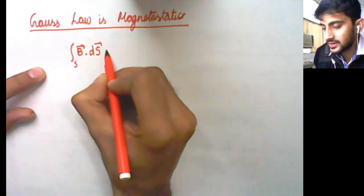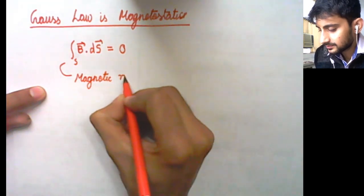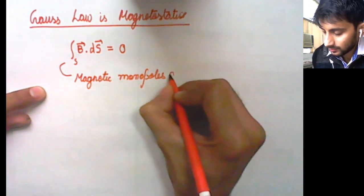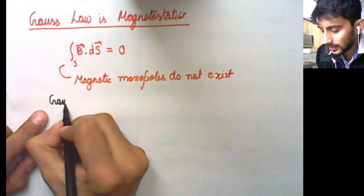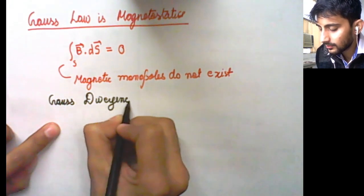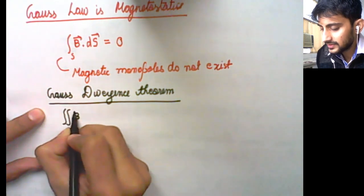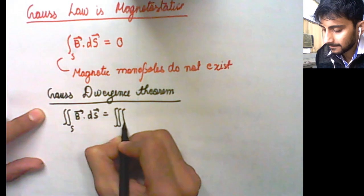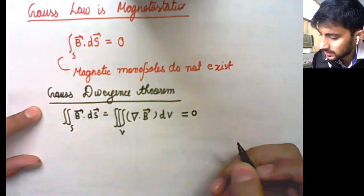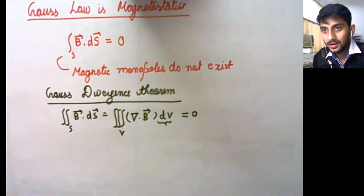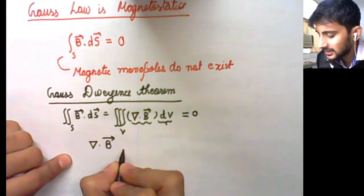The flux of magnetic field lines coming out of a closed surface area S equals zero. This also means that magnetic monopoles do not exist. Using Gauss's divergence theorem, the surface integral B·dS can be written as the volume integral of divergence of B over the enclosed volume, which is also zero. Since the volume is non-zero, divergence of B must equal zero.